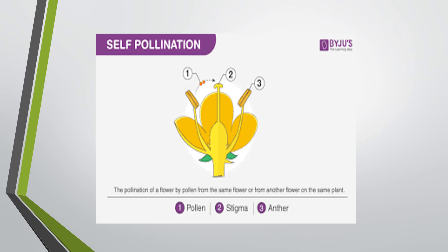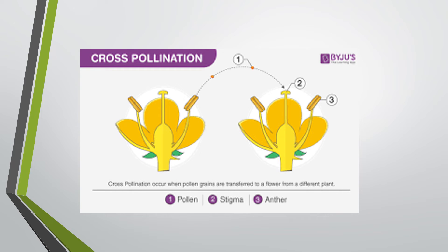Now let us understand the two types. Self-pollination means pollination of a flower by pollen from the same flower. Cross-pollination is when pollen grains are transferred to a flower from a different plant.